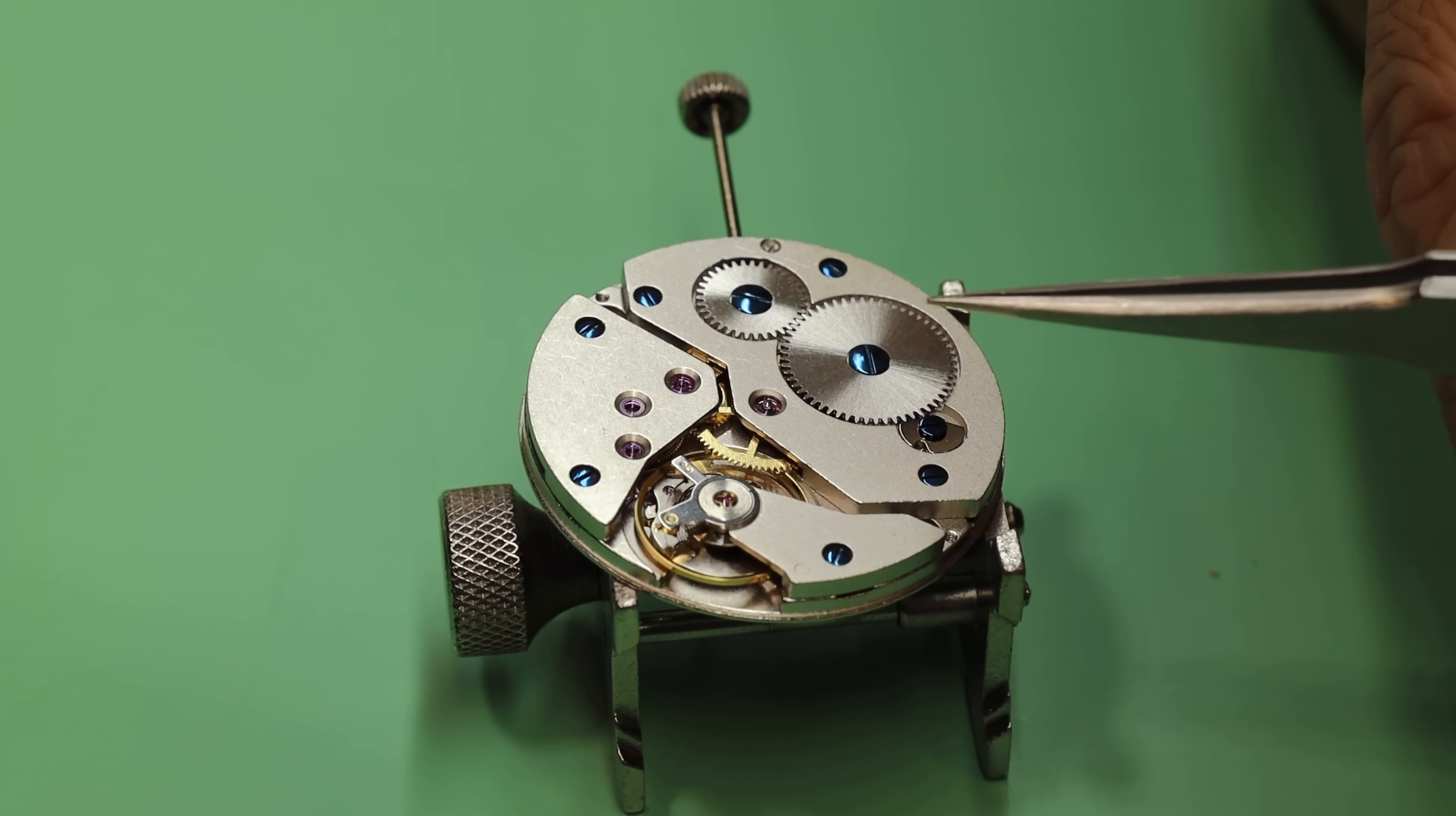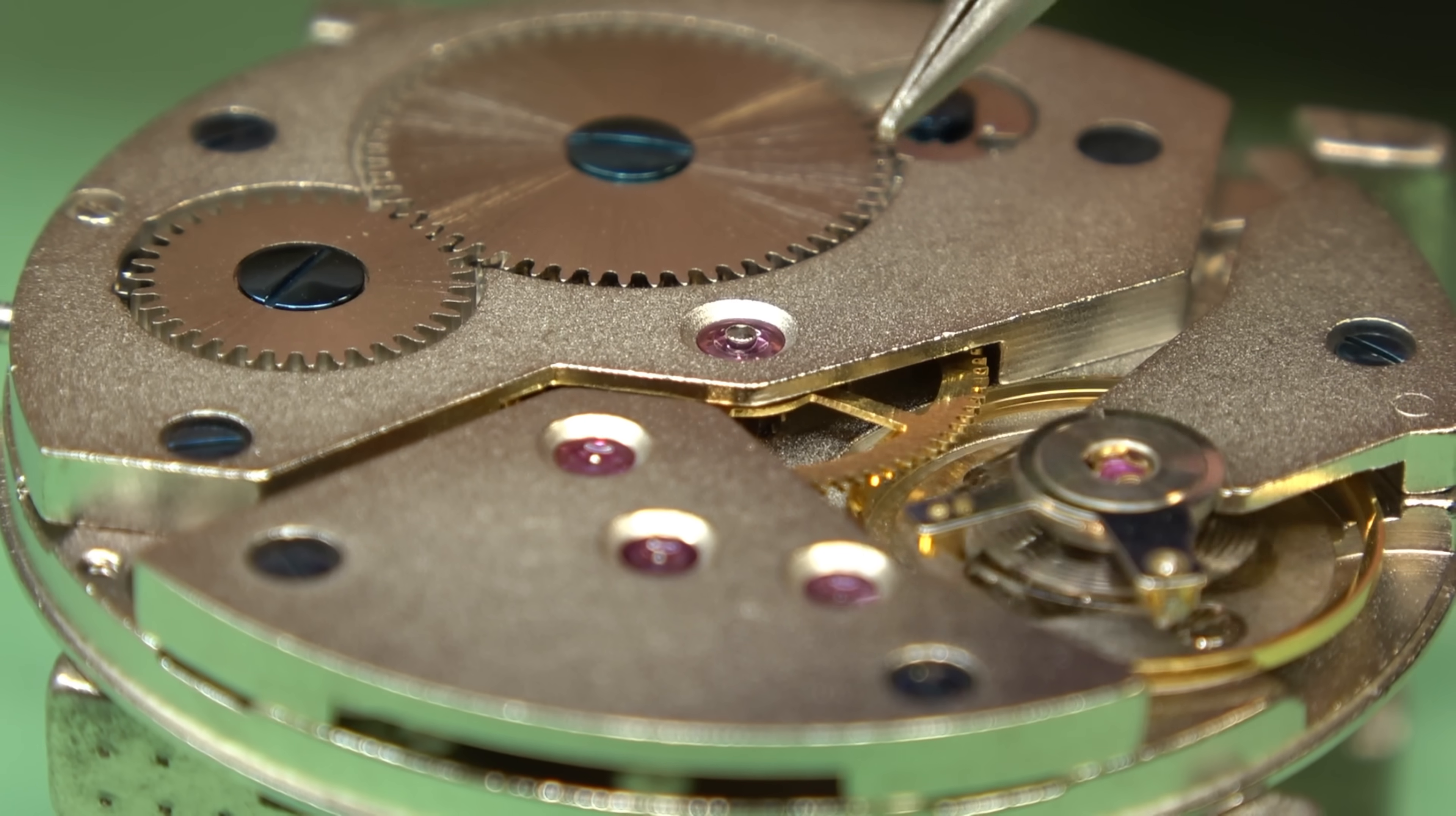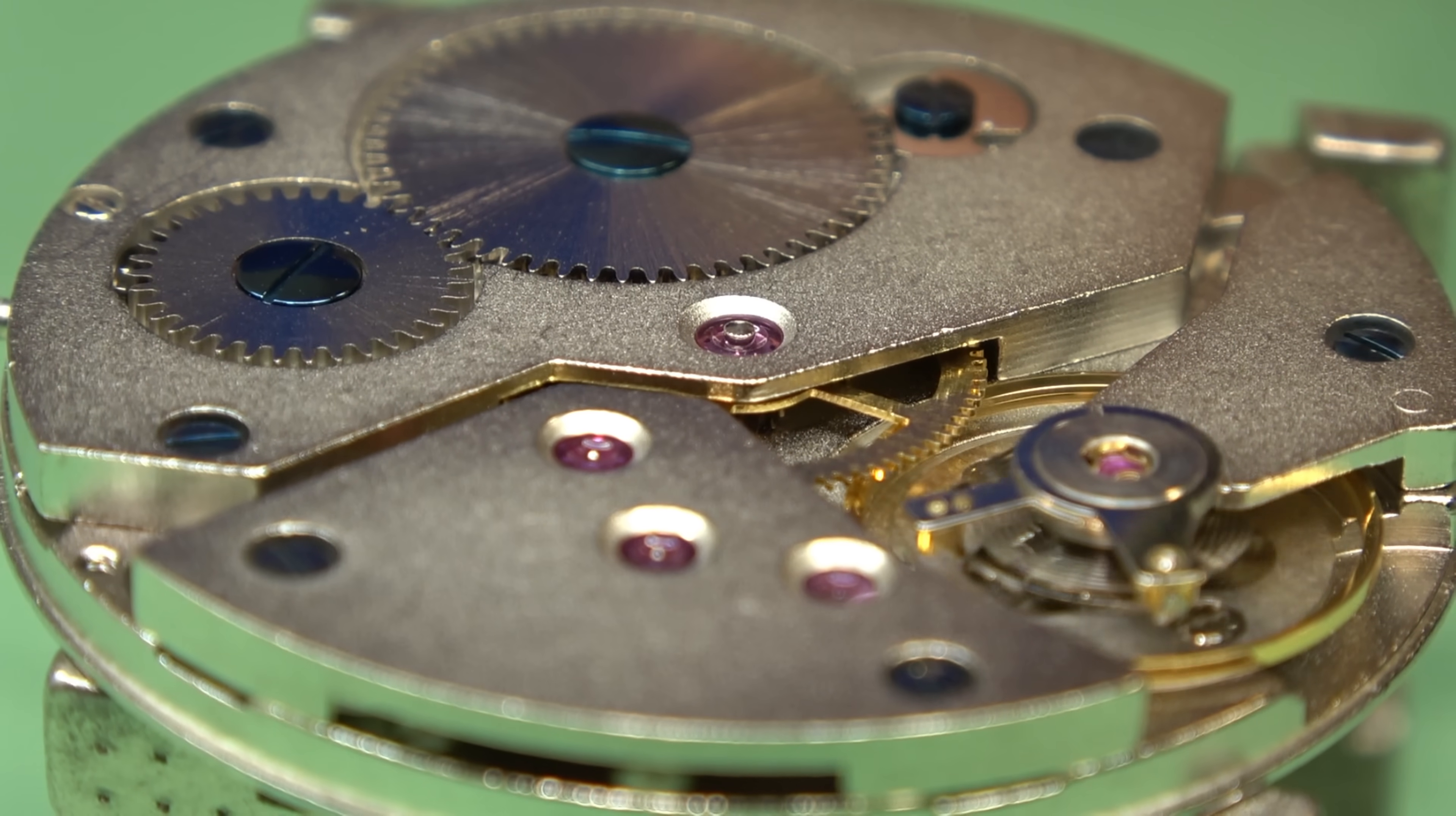So what's important to note as we start our little exercise here is that everything, absolutely everything on this side of the movement operates in only one direction. If a gear spins clockwise on this side, it always spins clockwise. If it spins counterclockwise, it always spins counterclockwise. Obviously, a gear spinning clockwise meshes with one spinning counterclockwise, they're going to go in opposite directions. But they never change direction.